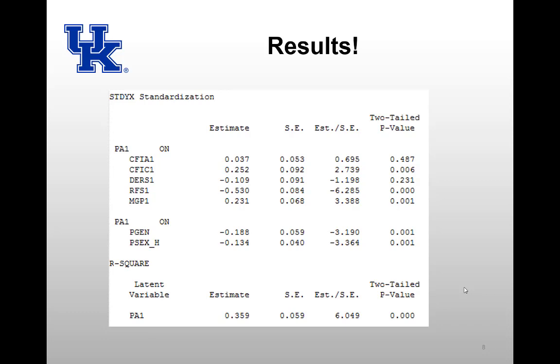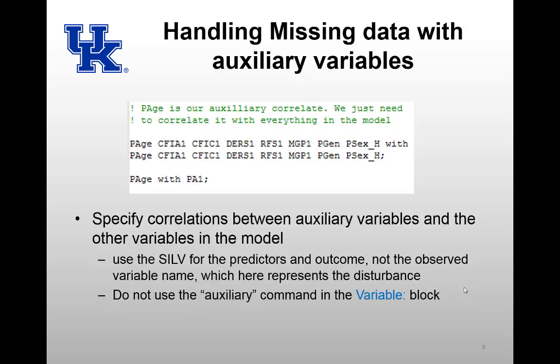But what if we wanted to handle the missing data correctly? There's a decent amount of missing data in this sample, and it turns out that declaring the single indicator latent variables, since it pulls CFIA, CFIC1, DERS1, RFS1, MGP1, and PA into the likelihood function, the deletion mechanism is different, and so it's kind of partially handling missing data in the sense that less data is being thrown out.